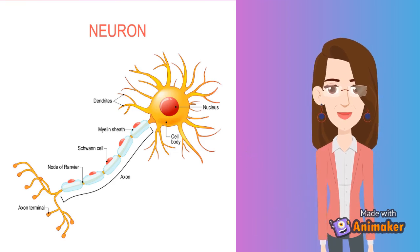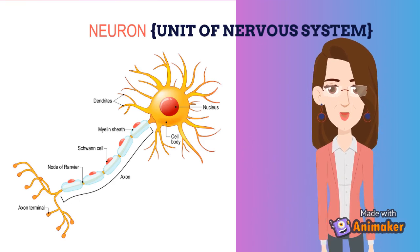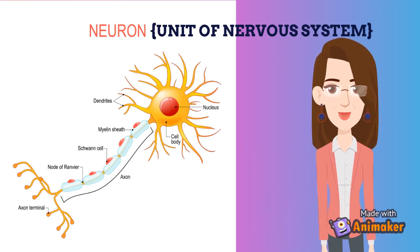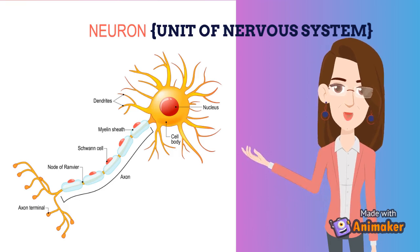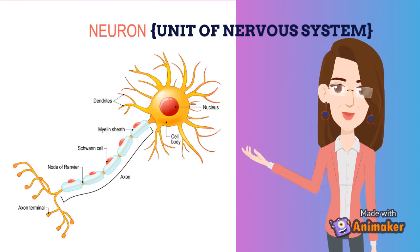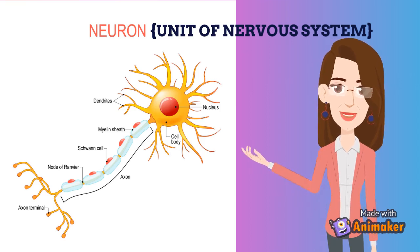Neuron is the unit of the nervous system. Our nervous system consists of the brain, spinal cord, sense receptors, and a whole lot of nerves. The brain and spinal cord are made up of neurons or nerve cells. The three main parts of the neuron are the cell body, dendrites, and axon.